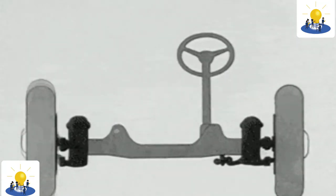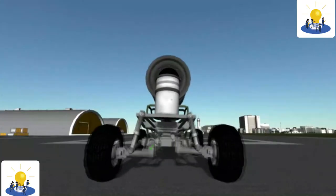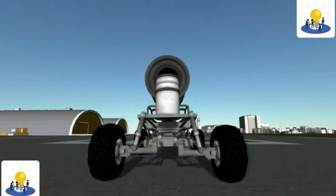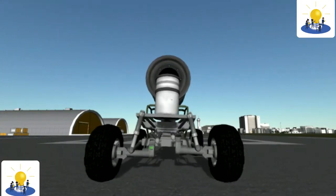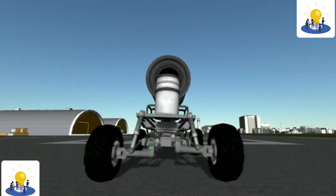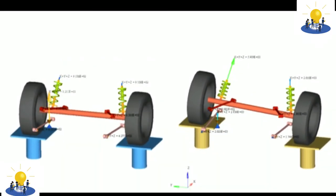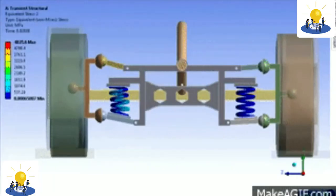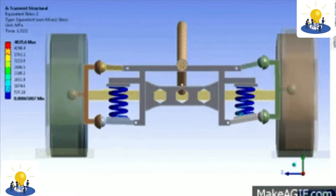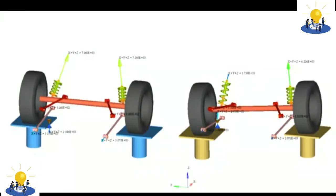Trailing arm suspension. Trailing arm is a type of suspension whose design is almost the same as three-link rigid, even though the working system is very different. The way it works is also different from the three-link rigid or other types of suspension. The trailing arm suspension has a connection from the right side to the left, and is usually placed at the back of the car.